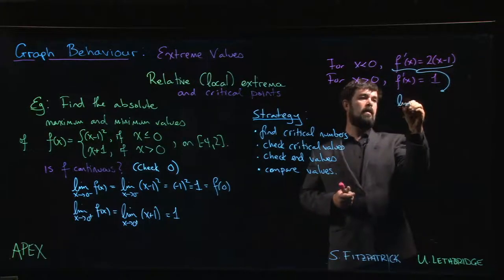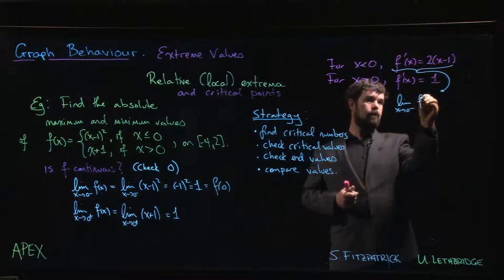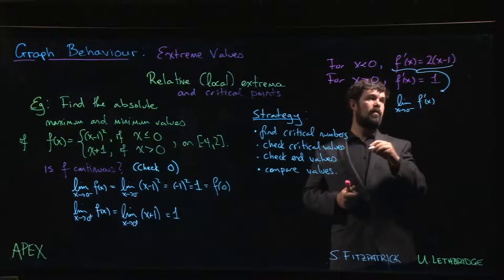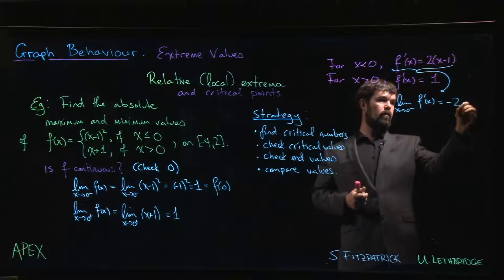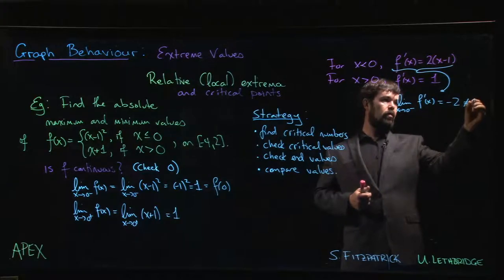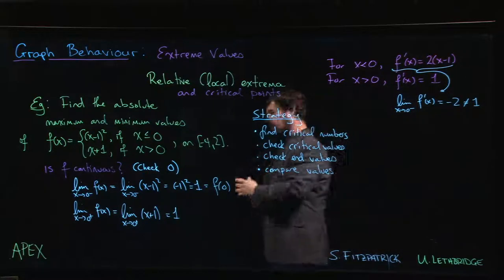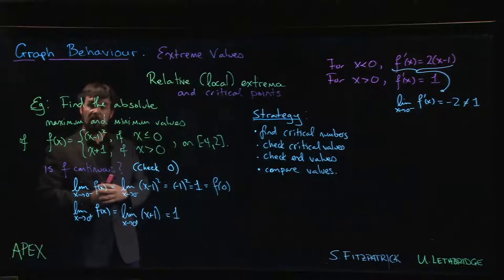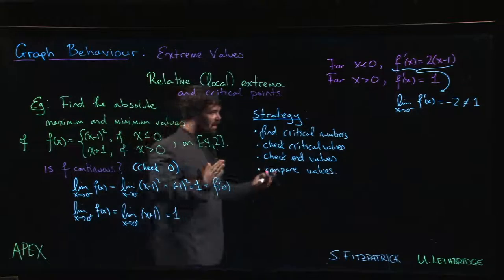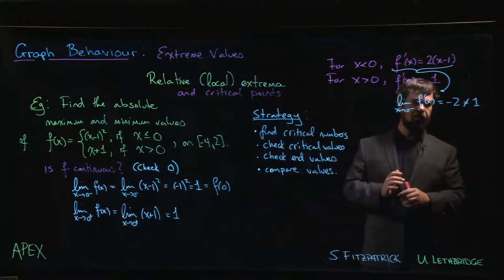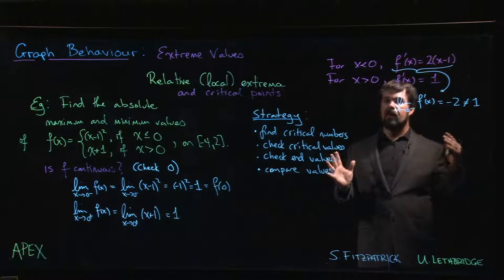The limit as x goes to 0 from the left of f prime of x is going to be equal to minus 2, which is not equal to 1. So when x is close to 0 and slightly less than 0, the slope of the tangent line is going to be close to negative 2. When x is bigger than 0, the slope of the tangent line is equal to 1, and so I think this is already enough evidence to tell us that the derivative is going to be undefined at 0.